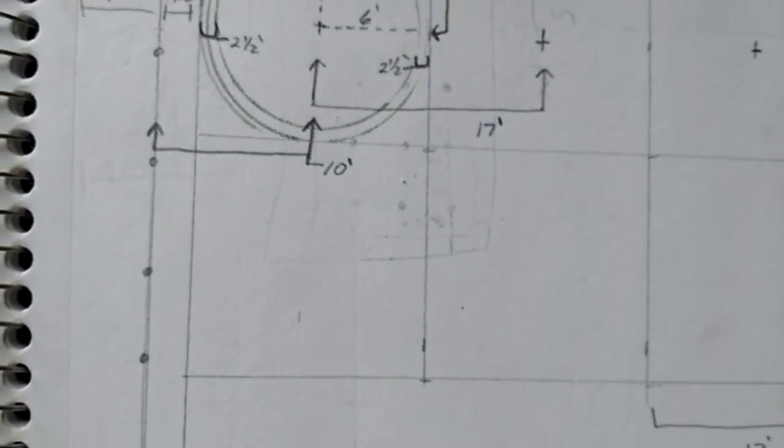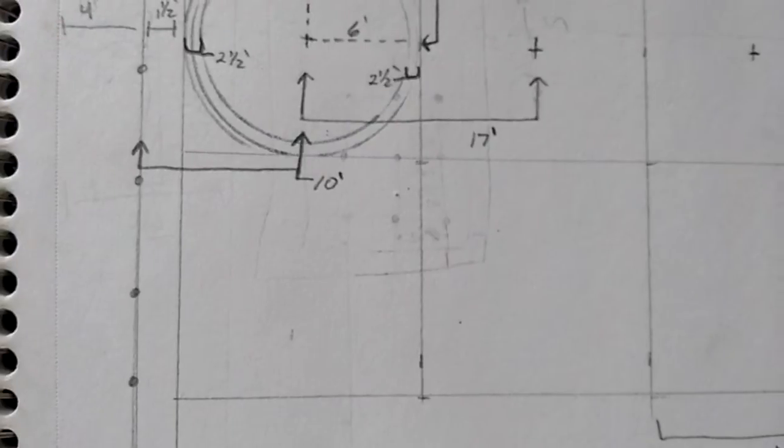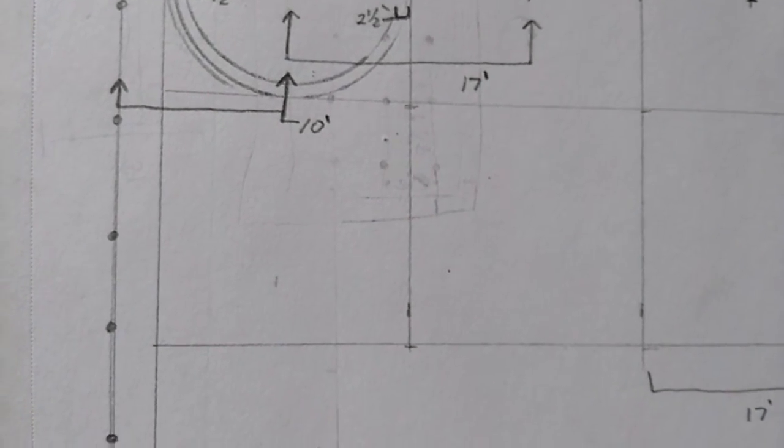I'd really recommend setting up string lines and using flags or spray paint to mark it out that way you can double check it.